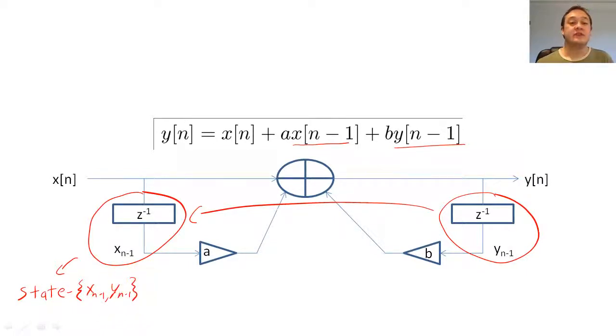Since our system is defined by two functions, the state and the input, we define y of n to be the summation of the system's response to the input and to the initial state.